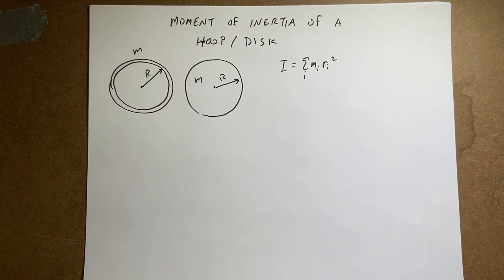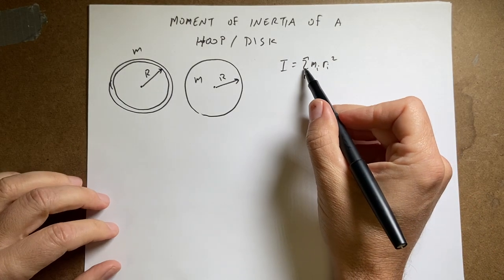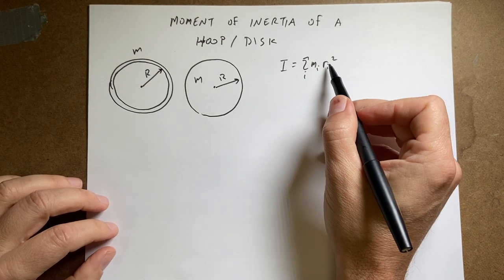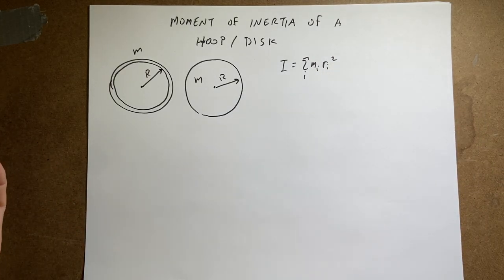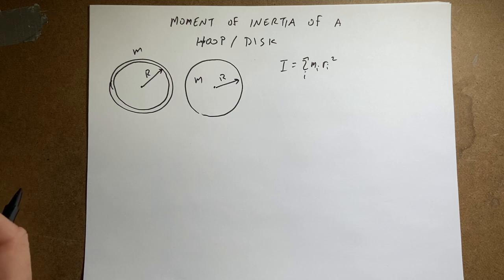Continuing with my moment of inertia calculations. I'm going to do both a disk and a hoop. Remember that moment of inertia is defined for point masses as the sum of m_i r_i squared. And so what I'm going to do is break this into an infinite number of tiny points and get the moment of inertia by integration.